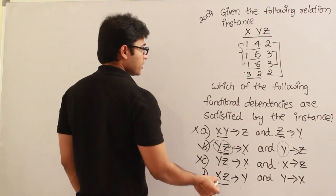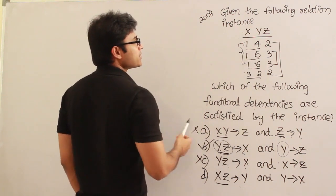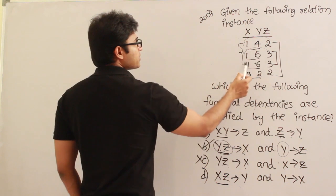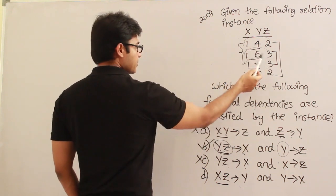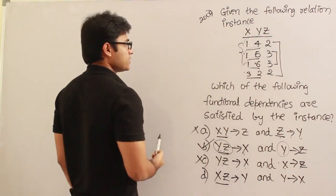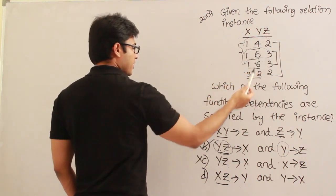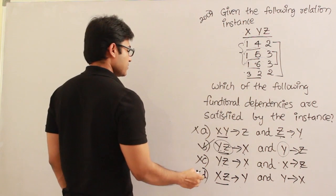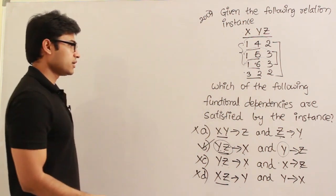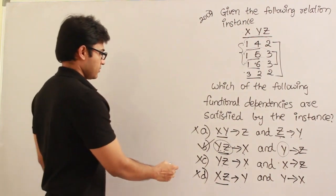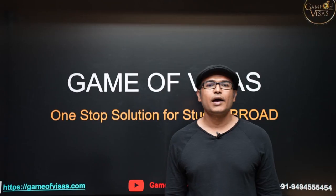What about this XZ? Let's see if there is any repetition in XZ. There is no 1,2 repeated, but 1,3 is repeated, isn't it? So 1,3 is repeated in values X and Z. Now for the same values of XZ, Y is having 5 and 6, therefore it is not satisfied. So only the functional dependencies which are satisfied on the instance is this one.